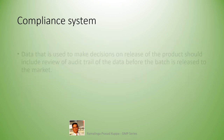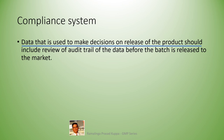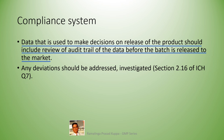Let us see the compliance system. Data used to make decisions on release of the product should include review of the audit trail before the batch is released to the market. The compliance system should include review of audit trail compliance for establishing compliance to GMP. Any deviations should be addressed and investigated as per section 2.16 of ICH Q7, and section 6.53 should also be considered for any investigations. Check your system whether all these aspects are addressed in your product release procedures for audit trail compliance.